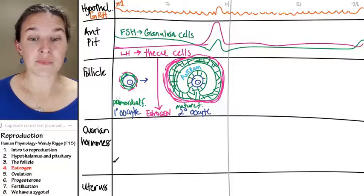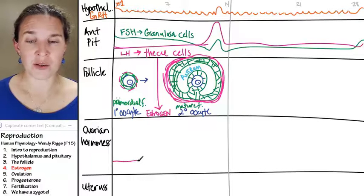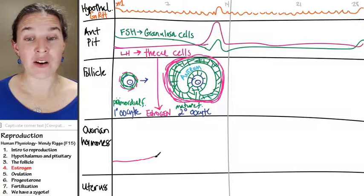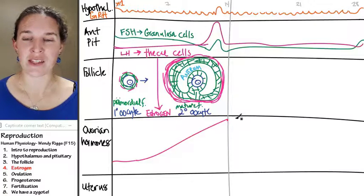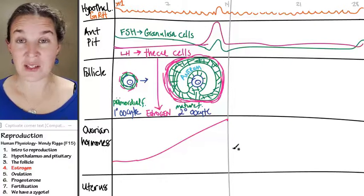So as they get bigger, we started out with estrogen kind of whatever, but as they get bigger, more and more cells are producing more and more estrogen, and we actually hit a peak of estrogen right in the middle of your cycle.